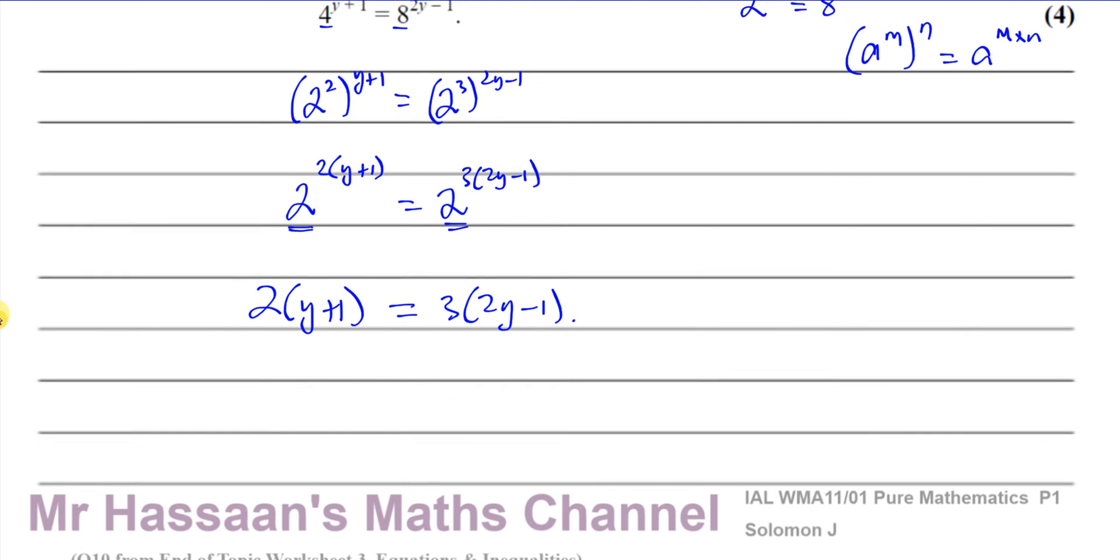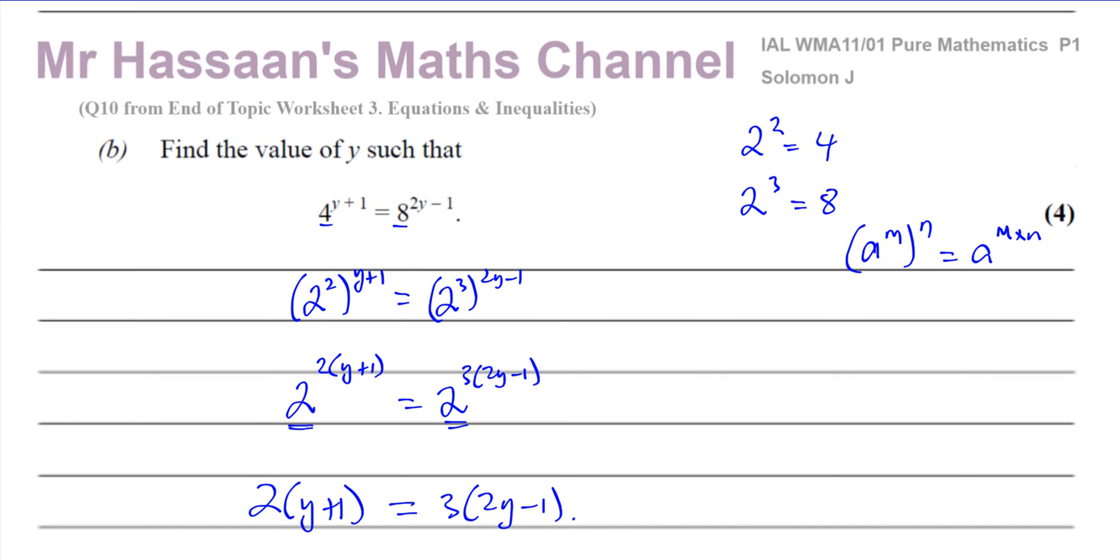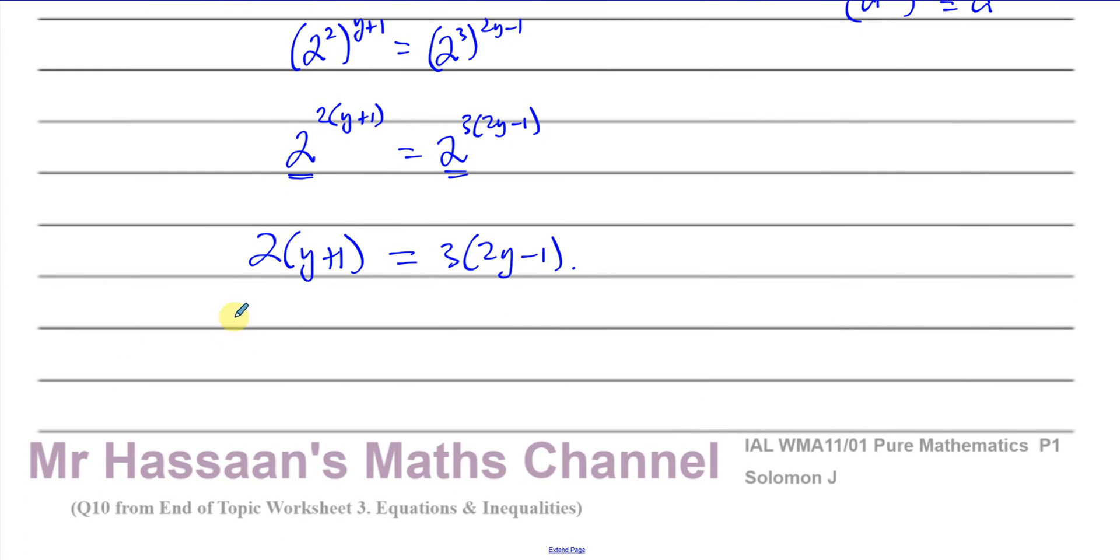And that will be the value of y which satisfies our original equation. So we can say this is 2y plus 2 equals 6y minus 3.